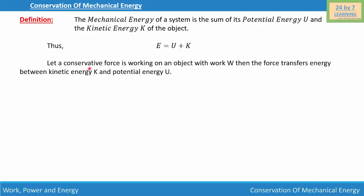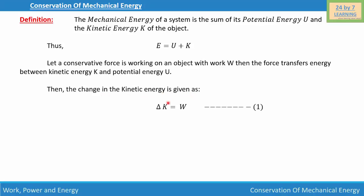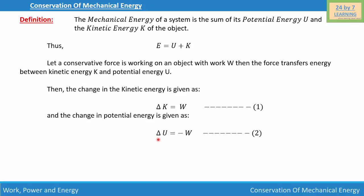Now let us consider a conservative force working on an object with the work W. The force transfers energy between kinetic energy K and potential energy U. We write the change in kinetic energy as ΔK = W — this is our first equation — and the change in potential energy as ΔU = -W — this is our second equation.